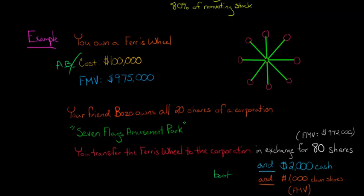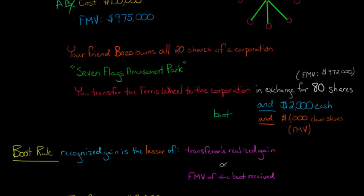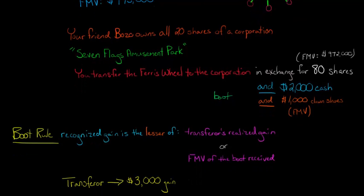This boot will trigger a $3,000 gain. We've got another video on the boot rule, so if you don't understand how we got to that $3,000 gain, don't worry about it. But suffice it to say for right now that the transferor, you in this case, is going to recognize a $3,000 gain. What we want to know is: what is Seven Flags Amusement Park's basis in the Ferris wheel?